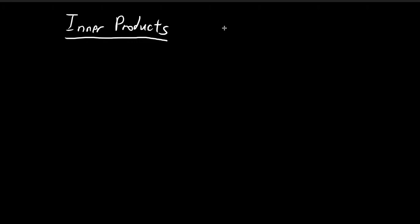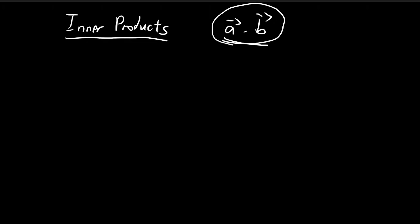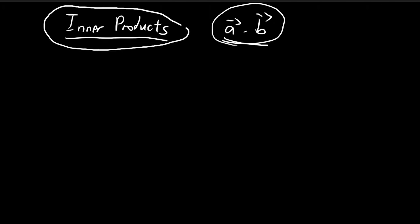In this video we are going to talk about inner products. This concept is closely related to the dot product that we encounter in Euclidean vectors, because inner products are an extension of this concept. People first defined dot products for Euclidean vectors because they were useful, and then later mathematicians found that we can generalize this concept for other mathematical objects. So you can understand dot products as a subset of the larger concept of inner products.